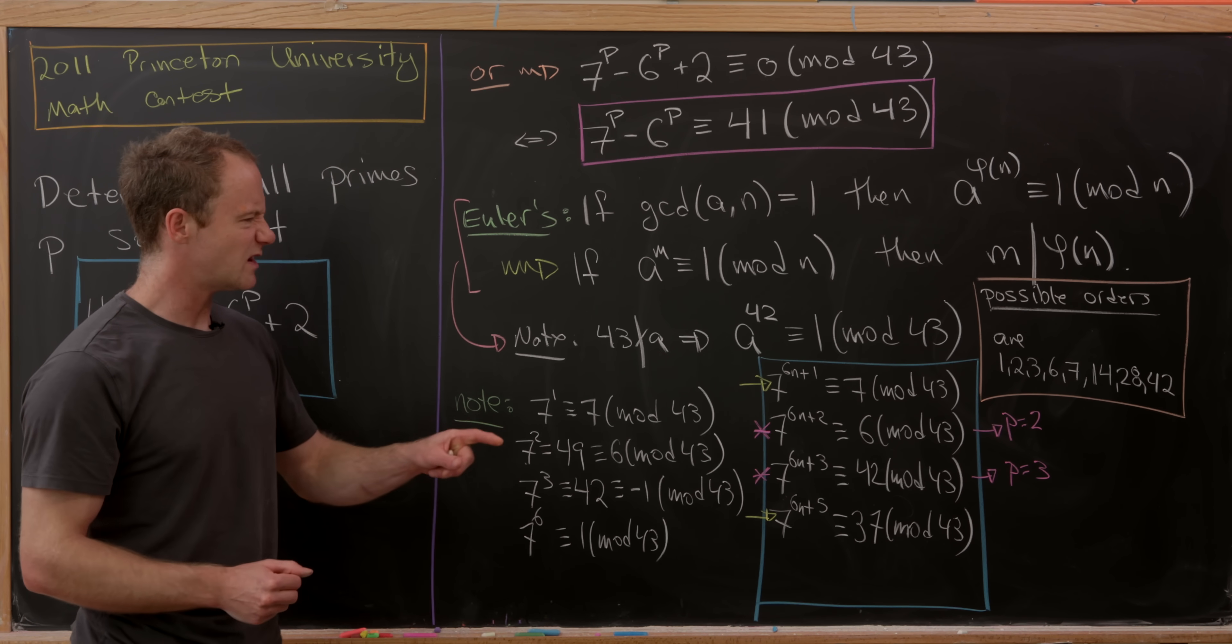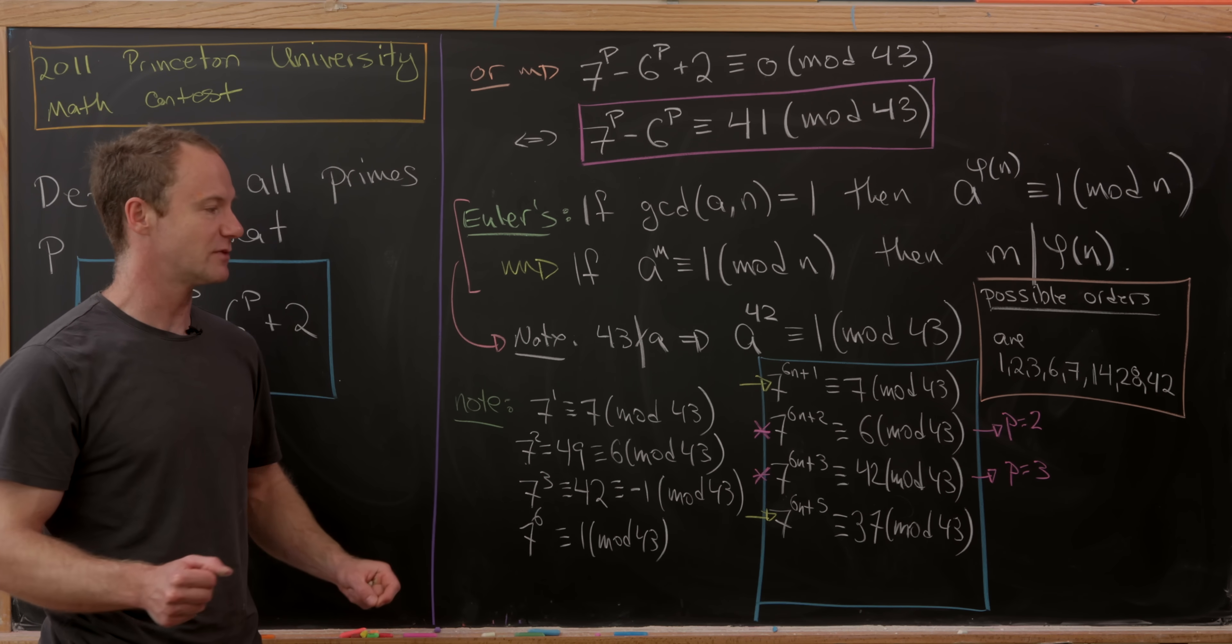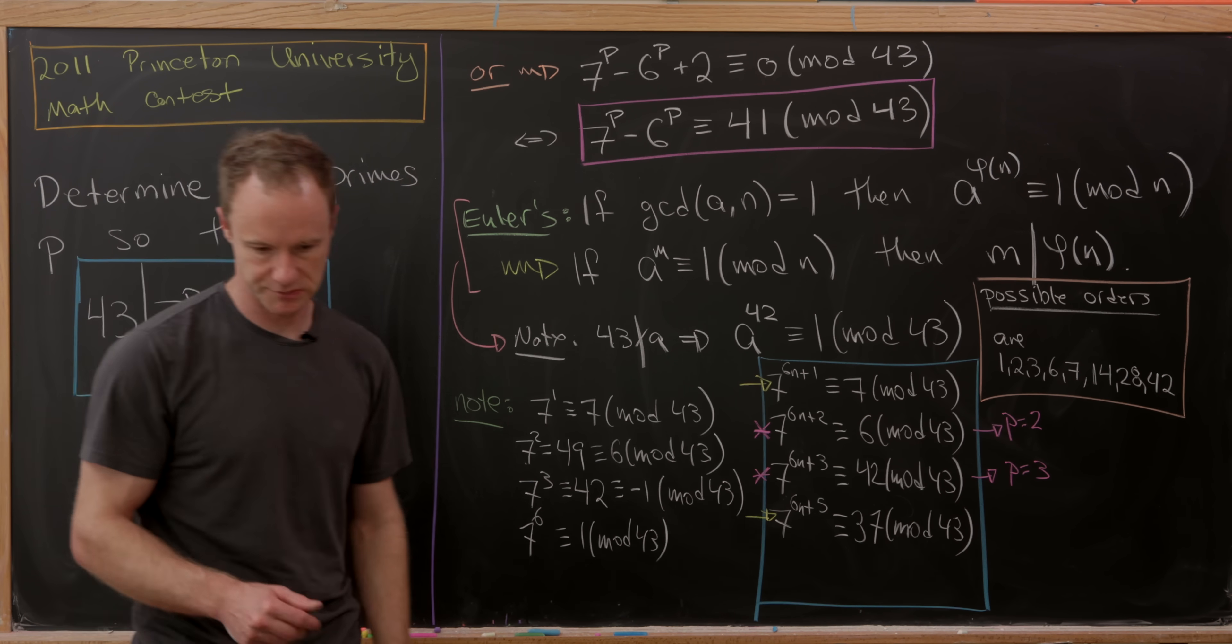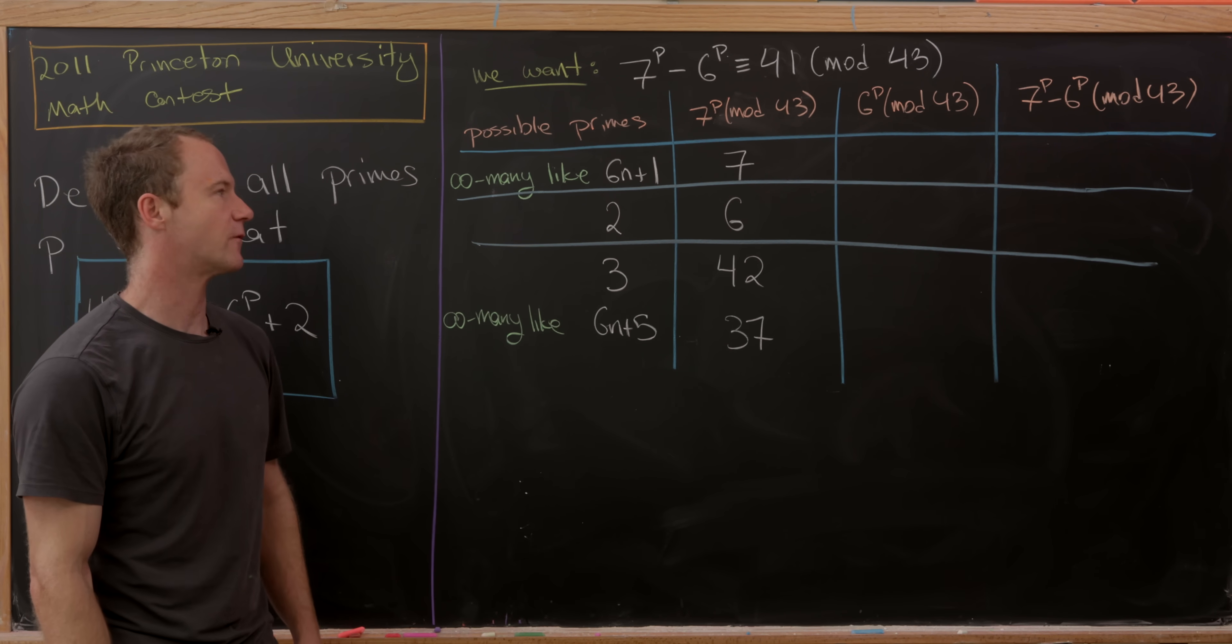Let's bring that chart to the top and then we'll make a similar one for powers of 6. Here's what we came up with on the last board. We found the powers of 7^p mod 43.